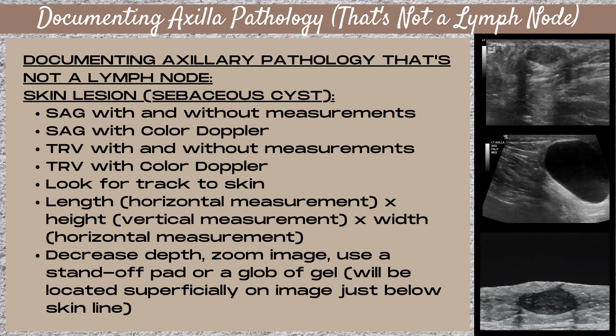To document a skin lesion such as a sebaceous cyst on ultrasound, you want to take a sagittal image with and without measurements, a sagittal image with color Doppler, a transverse image with and without measurements, and a transverse image with color Doppler. The most important thing is to look for a track to the skin, which is a thin black line between the mass and the anterior surface of the skin. It's not important which transducer plane you take your measurements from — you just want a length (horizontal), a height (vertical), and a width (horizontal).